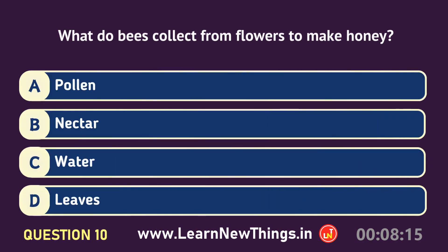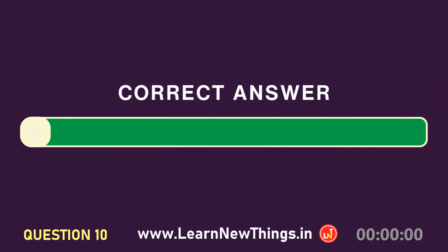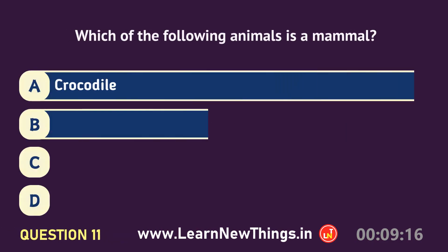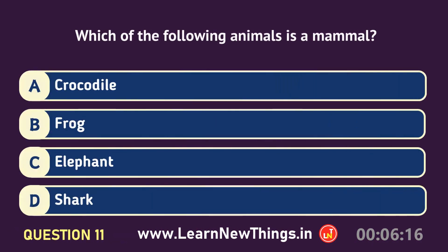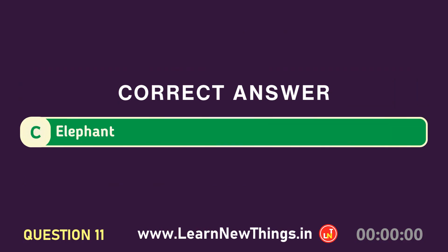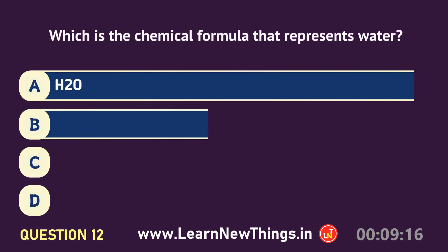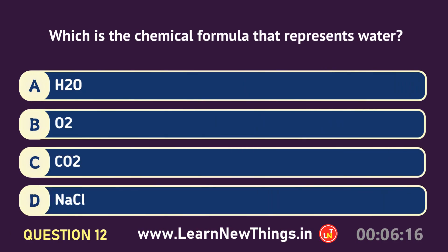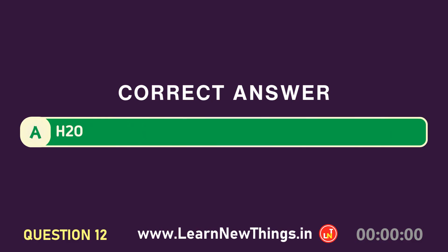What do bees collect from flowers to make honey? Nectar. Which of the following animals is a mammal? Elephant. Which is the chemical formula that represents water? H2O.